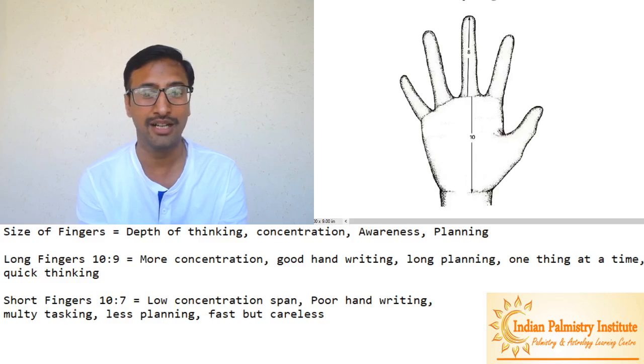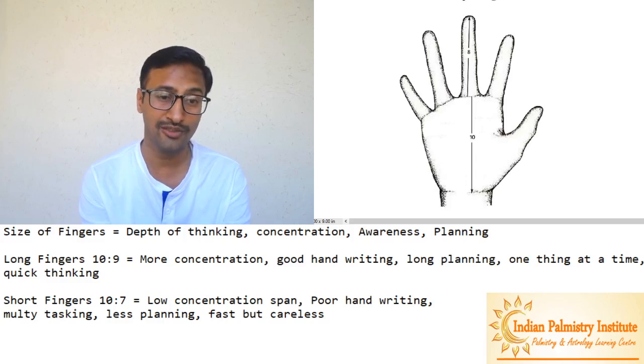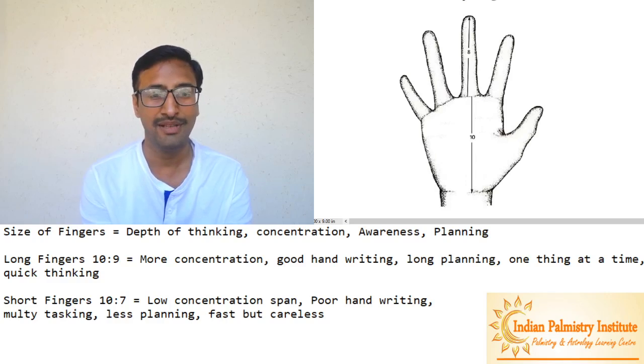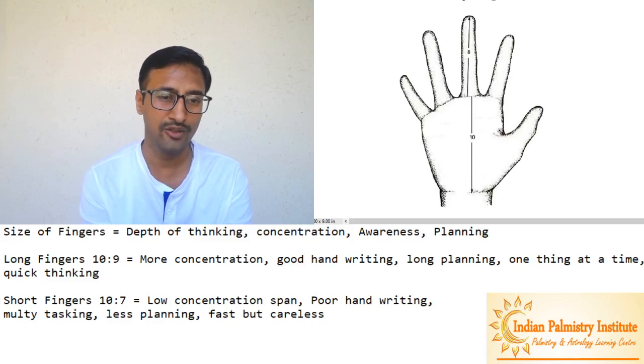You might have seen some artists, singers, good ones - they have narrow palm and long fingers. So they have the depth of thinking and perfectionist approach both. Many artists are there with short fingers, narrow palm, so they become artists but not so great maybe. They will lack this concentration span to practice long time. For them keeping their mind on one thing forever will be difficult.